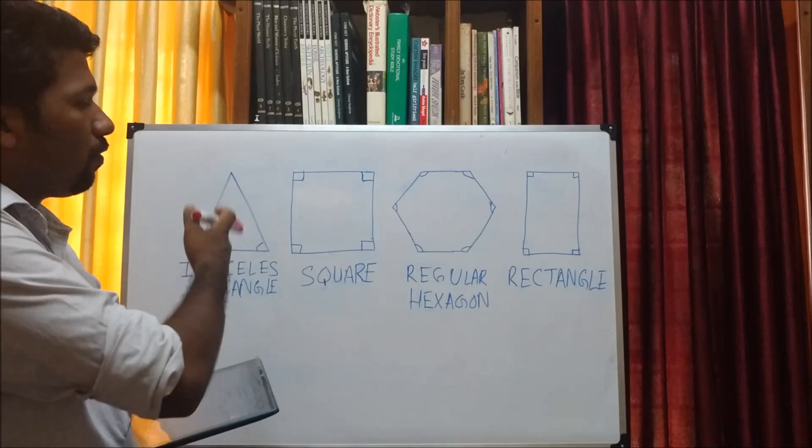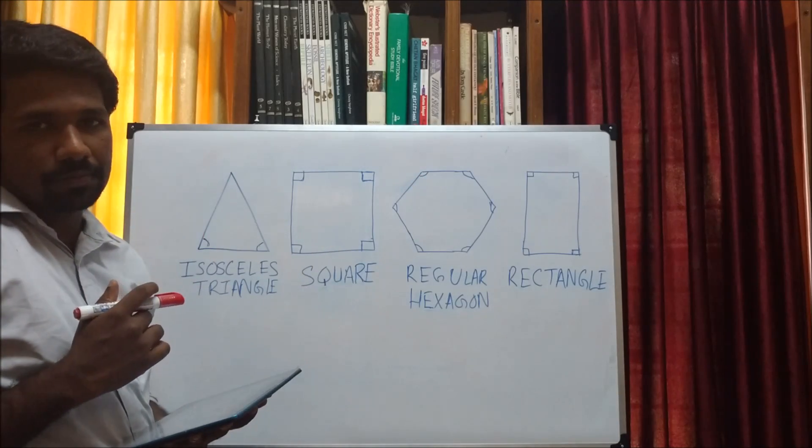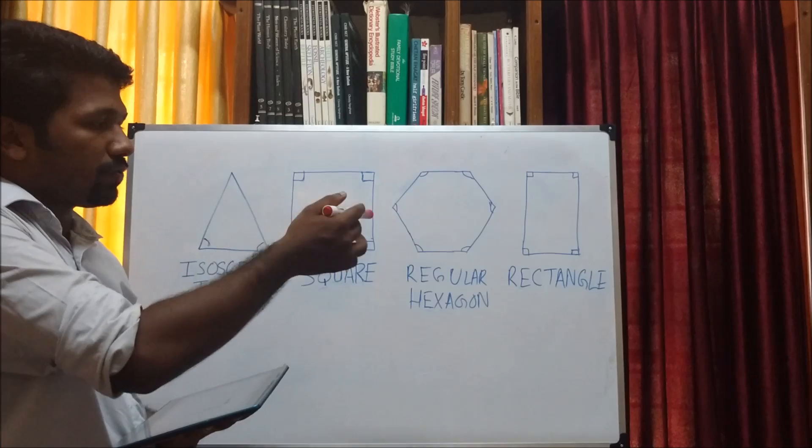So we are given four different geometrical shapes and we have to find the odd one out among those four shapes.